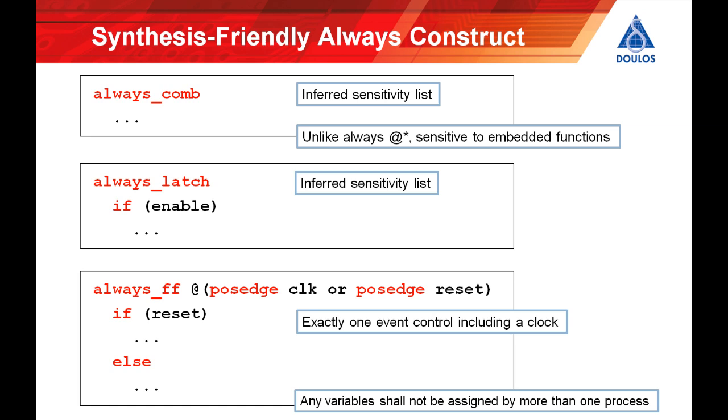Finally always ff which is intended for clocked always blocks. An always ff must have exactly one event control which must appear immediately after the always keyword. Synthesis tools might be expected to check that the coding rules for synthesizing clocked logic had been followed. All three of these special forms of always share a common rule that a variable must not be assigned by more than one process, ensuring that you don't get the outputs of regular active logic gates while wired together.